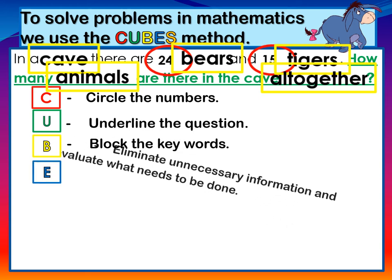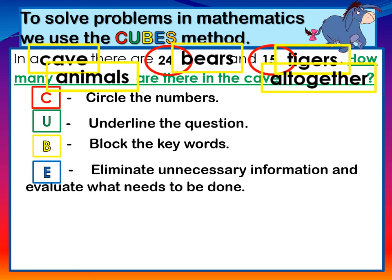E. Eliminate the unnecessary information. Eliminate simply means to get rid of things that we no longer need. And evaluate what needs to be done. Evaluate means to think about what needs to be done.